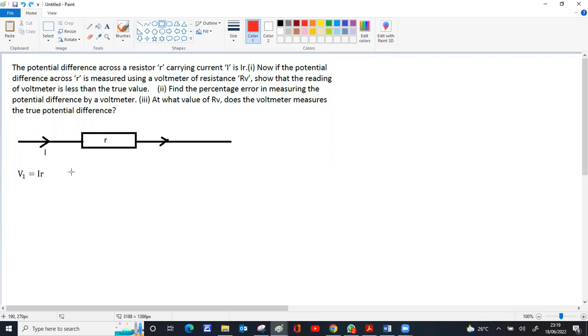Now we connect a voltmeter in parallel to it. This combination can be replaced as a single resistor rp. So rp equals the parallel combination resistance of r and the voltmeter, which is r times rv divided by r plus rv.